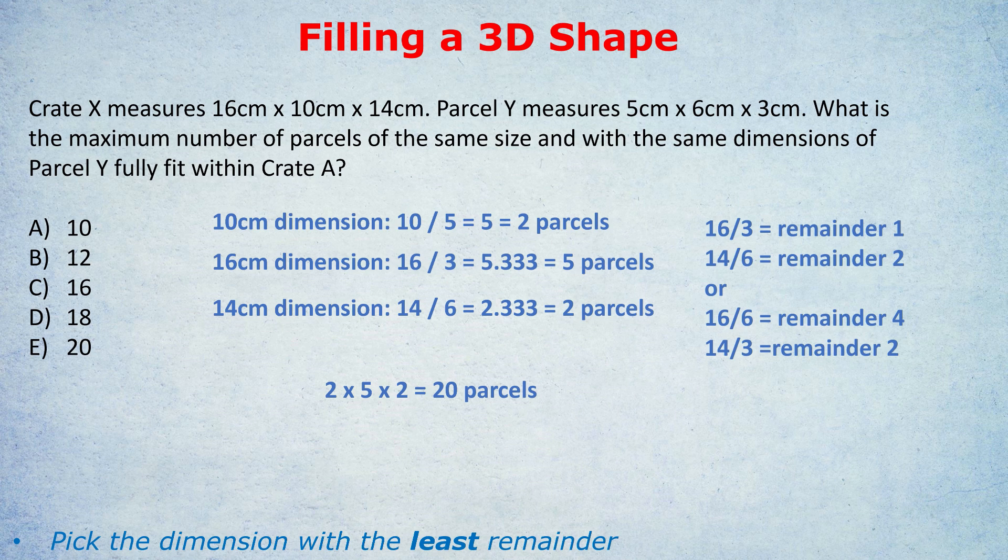Well, I want to quickly demonstrate something. Let's imagine we picked it the wrong way round, where we had the higher remainders. So we do the 16 divided by the 6 and the 14 divided by 3. 16 divided by 6 goes in twice. 14 divided by 3 goes in 4 times. So we have 2 and 4 as the answers. 2 times 4 times 2 for the 10cm dimension. 2 times 4 times 2 is 16. So we'd have only fitted in 16 parcels into the crate. Whereas doing it the correct way around with the least remainder, we can fit in 20 parcels. A much better outcome.